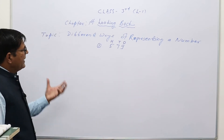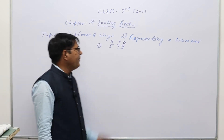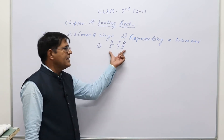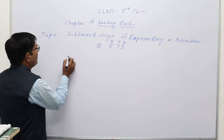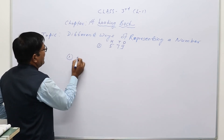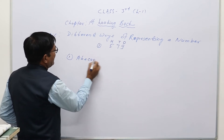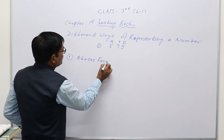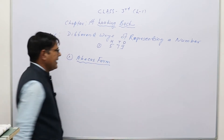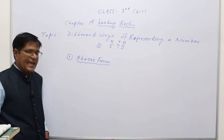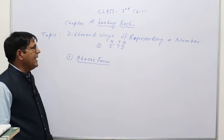There are a total of four different ways of representing this number. The first form is the abacus form.